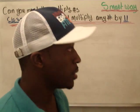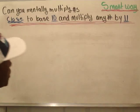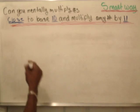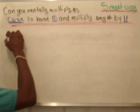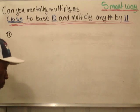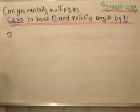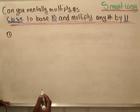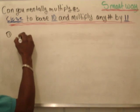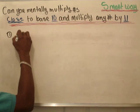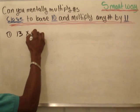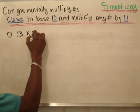And this is how we do it. For problem number 1, let's say we have a number like 13 times 12.